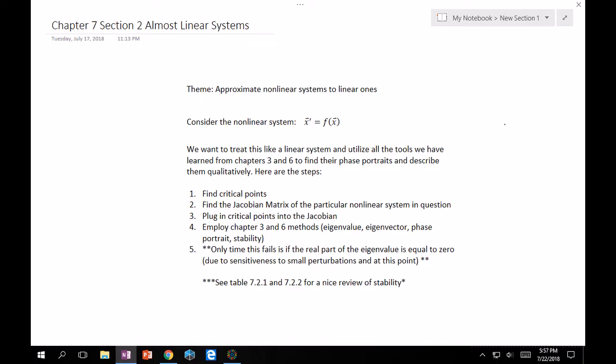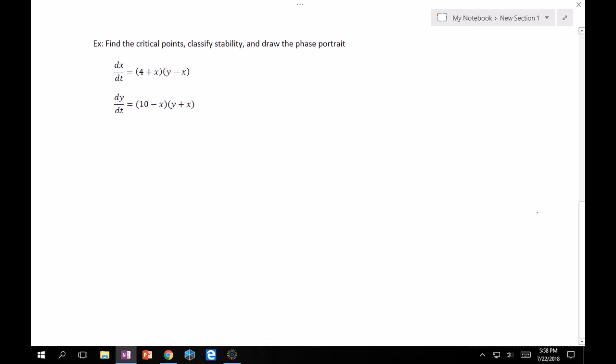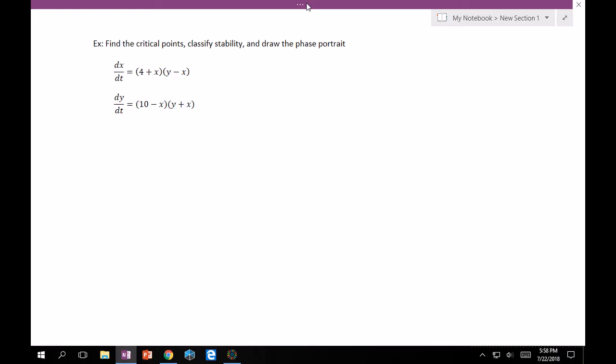Check table 7.2.1 and 7.2.2 for a nice review of stability. It tells you what you're about to see for this unit and is nice to have on hand if you're not sure if you're doing something correct. So with that, let's get started. The problem is find the critical points, classify stability, and draw the phase portrait.